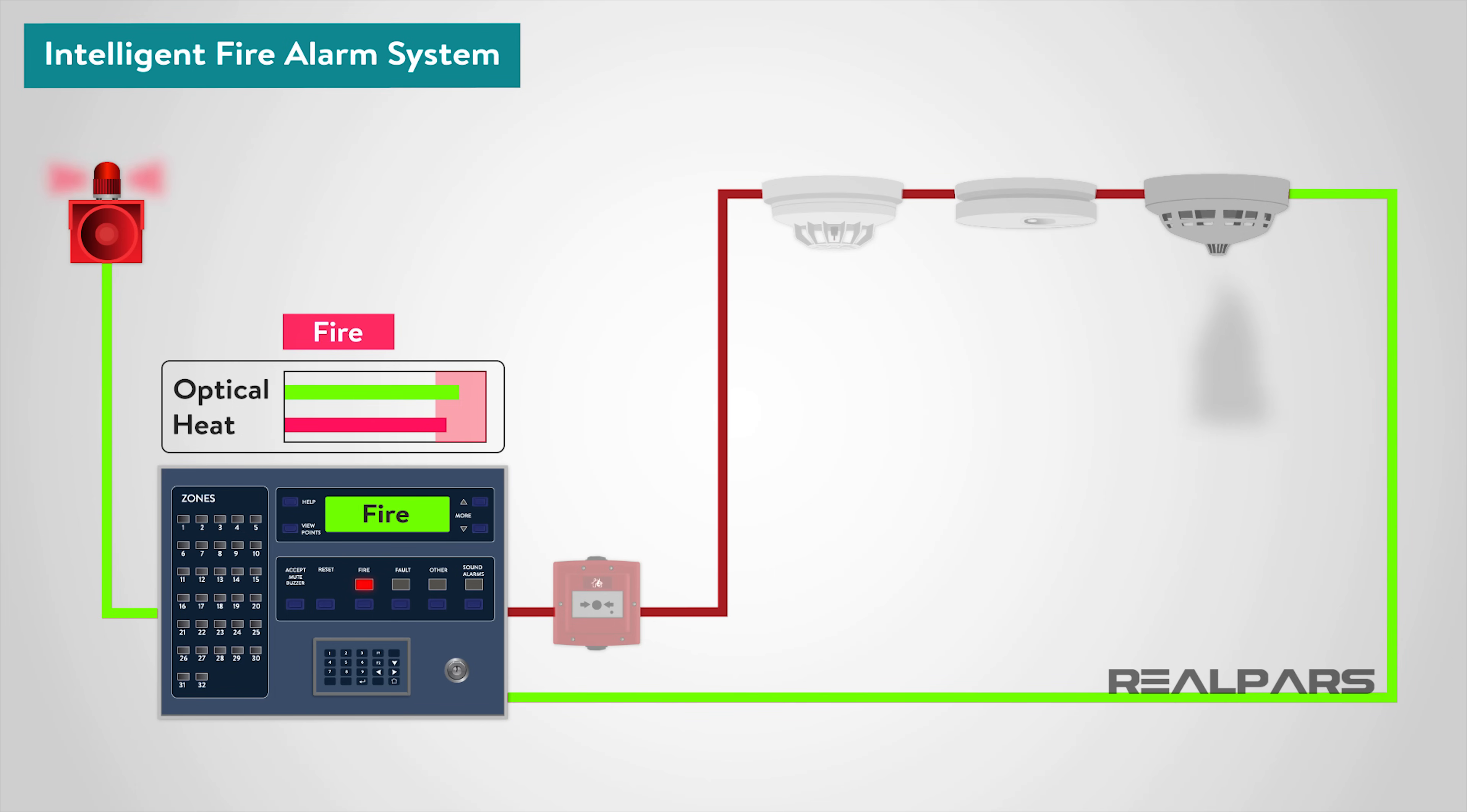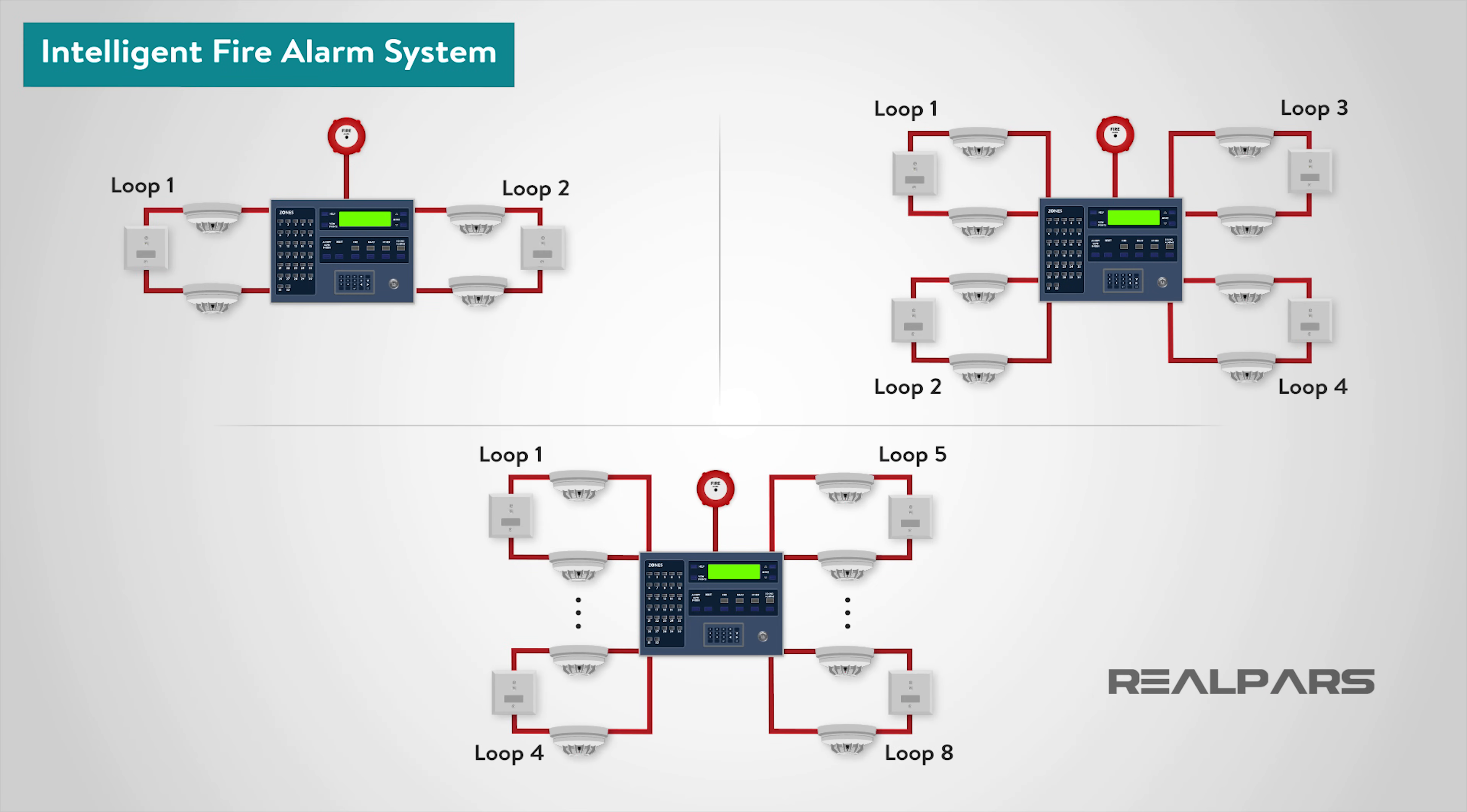Essentially, intelligent systems are far more complex, and incorporate far more facilities than conventional or addressable systems. Their primary purpose is to help prevent the occurrence of false alarms. Intelligent fire alarm systems are available in 2, 4, and 8 loop versions, which means large premises can be monitored from one single panel.